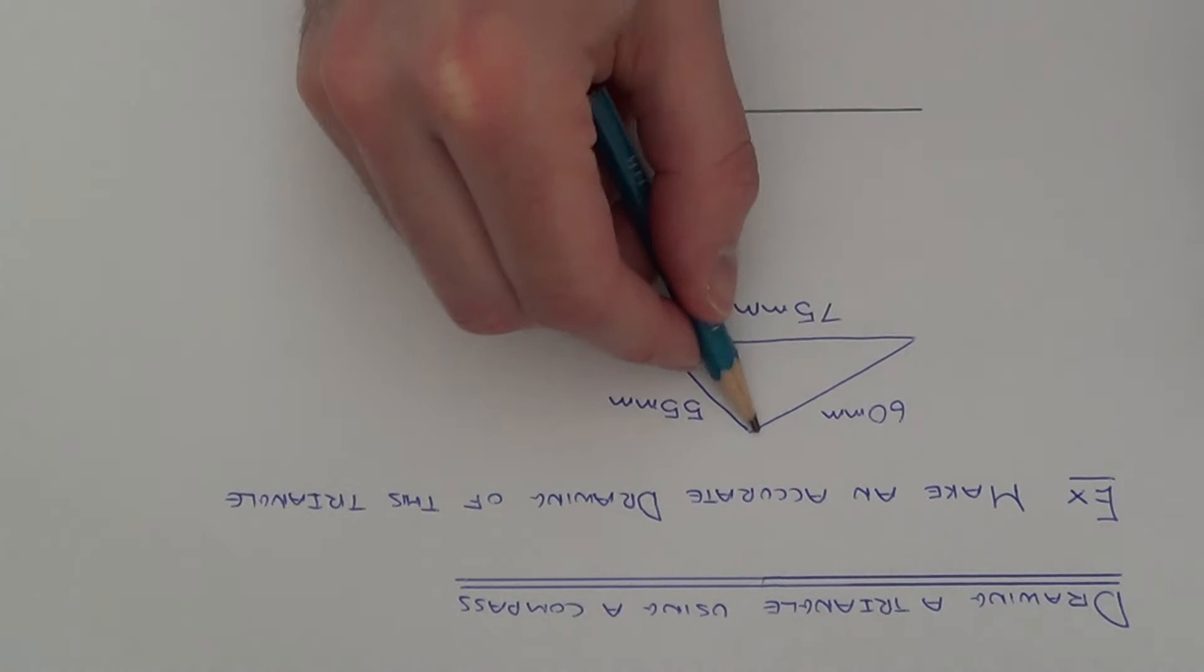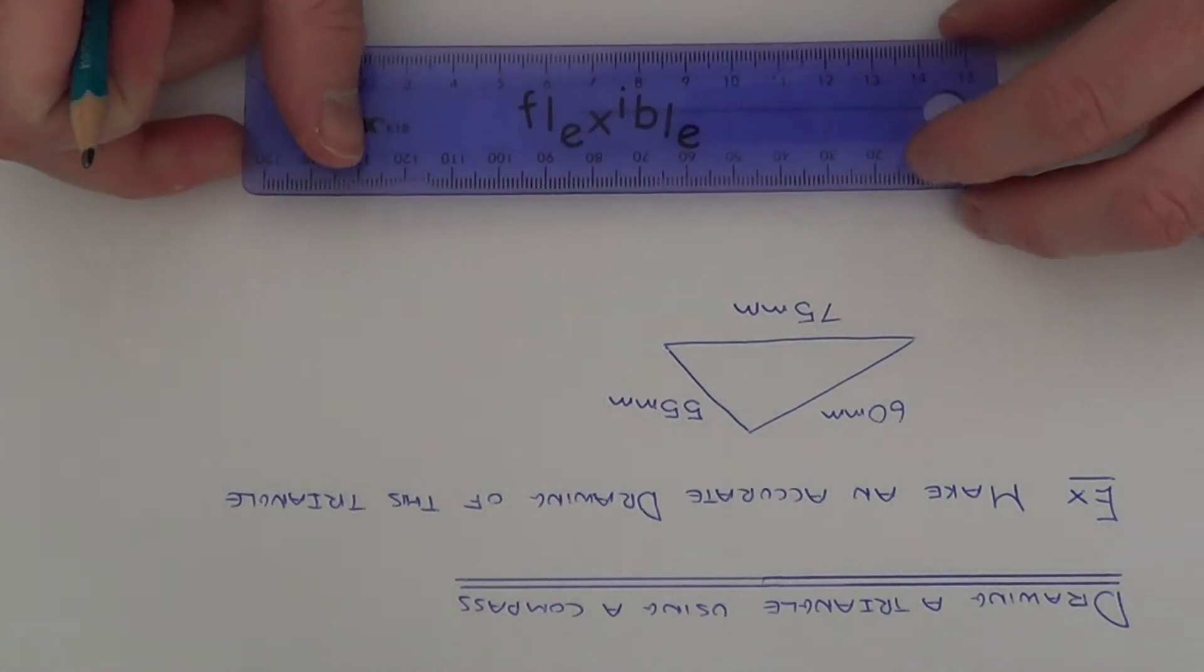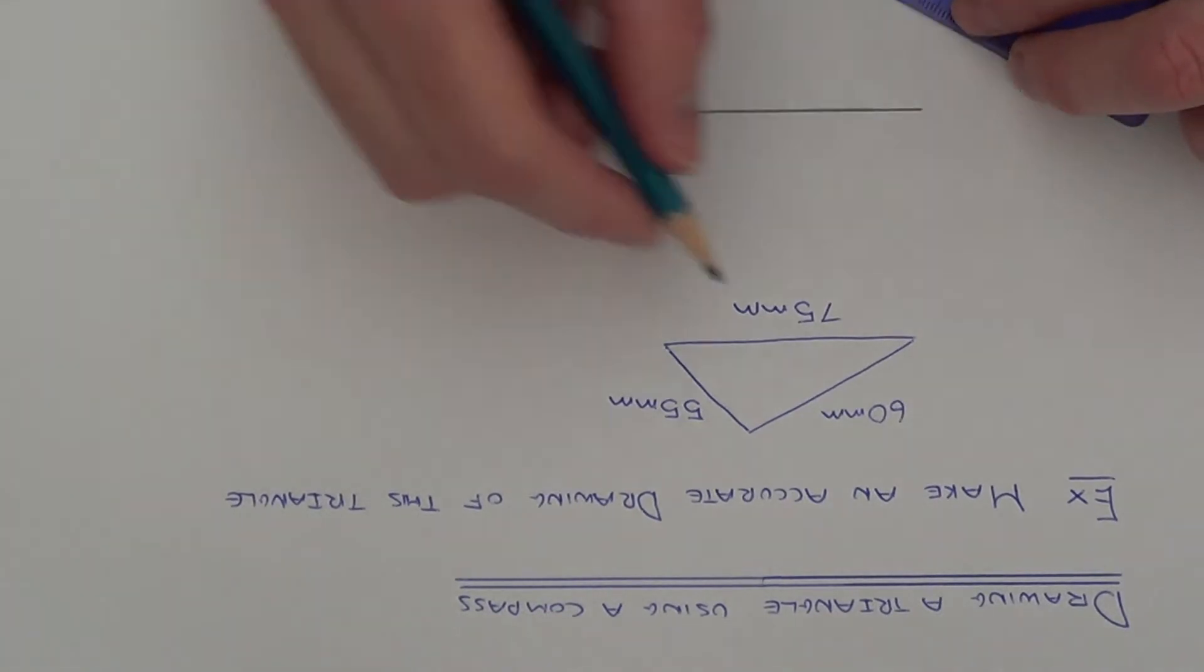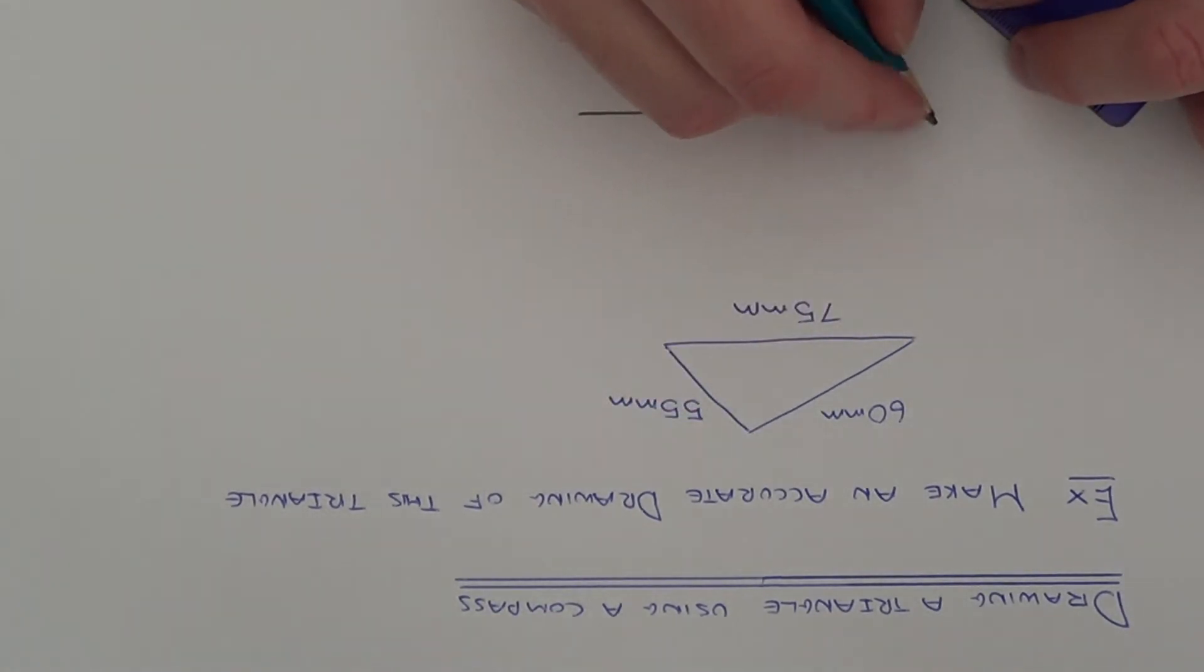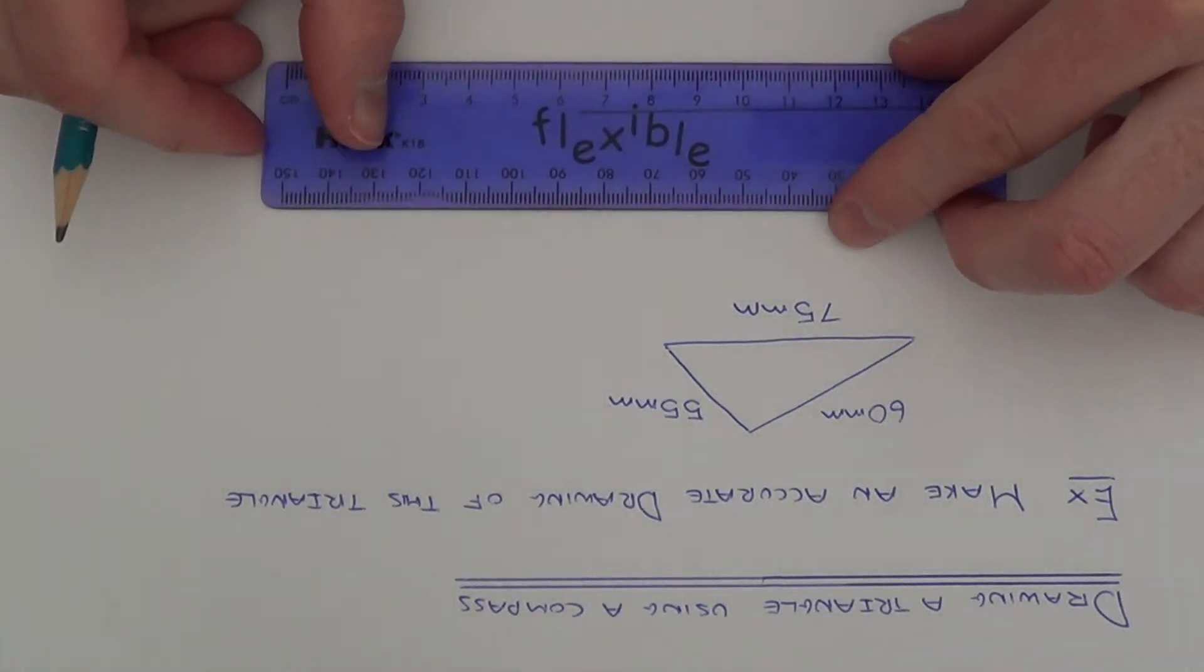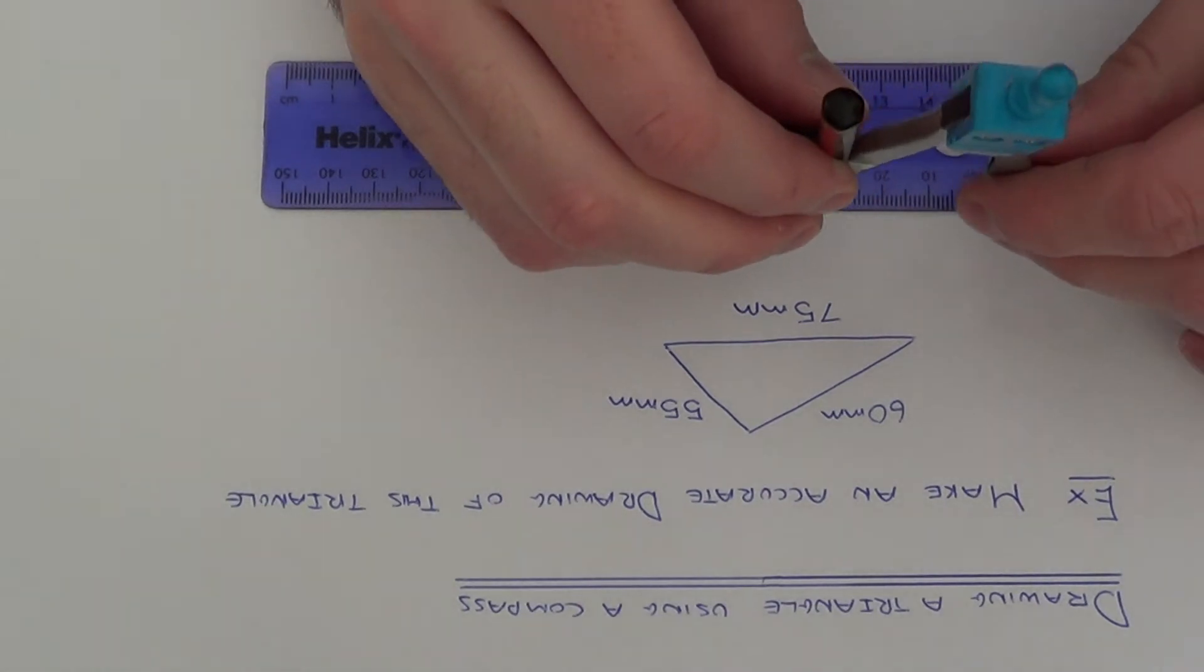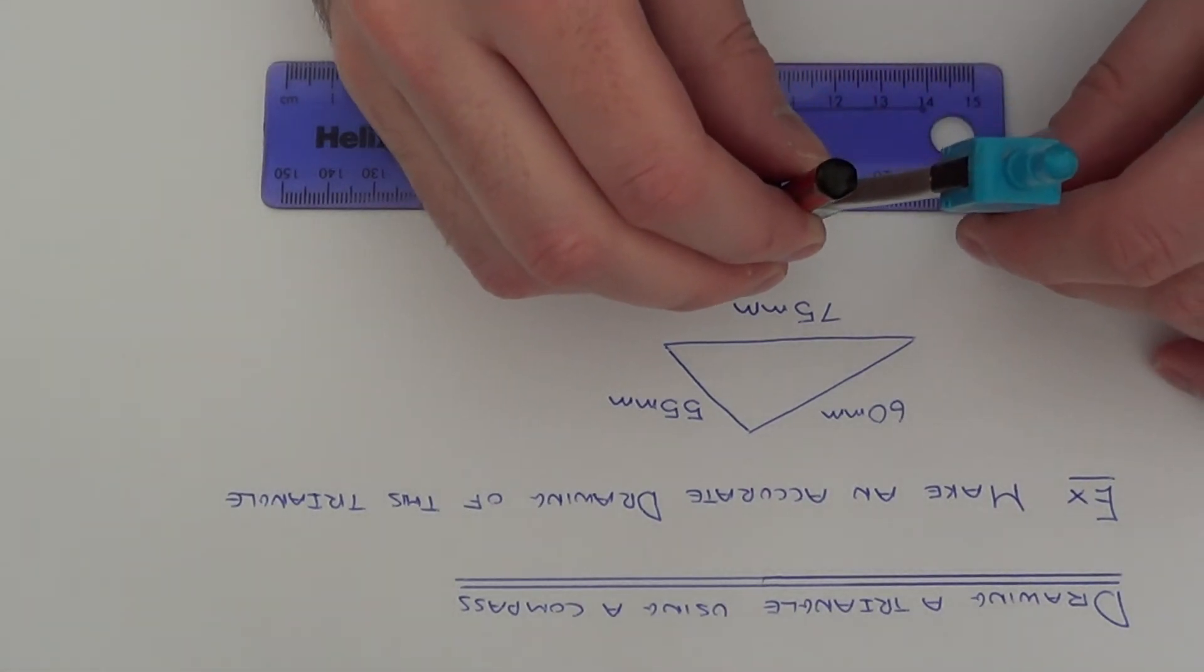We've now got two other sides to measure. So this is where you need your compass. Let's do the left hand side first of all. If you get your ruler, now you need to open your compass to 60mm.